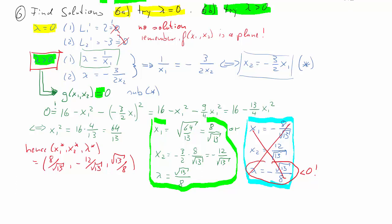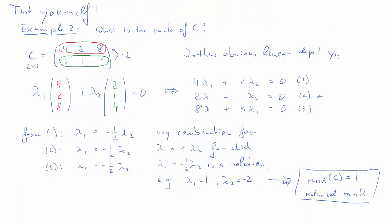Recall we tried lambda equal to 0 but found no solution. Then for lambda greater than 0 we found two solutions, but only the green one was viable because the blue one violated a necessary condition. This is an interesting case: because the unconstrained problem is a plane with no unconstrained maximum, we only obtained a maximum by imposing the constraint.